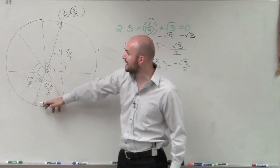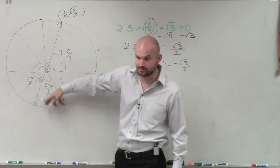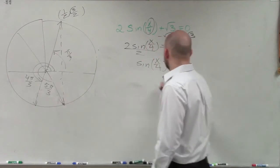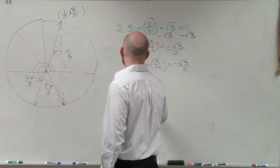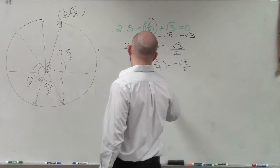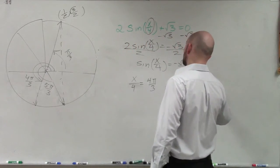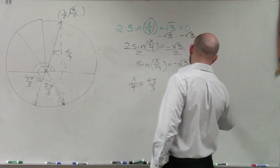This point would be negative 1 half, negative square root of 3 over 2. This point would be positive 1 half, negative square root of 3 over 2. So therefore, I can now say x divided by 4 equals 4 pi over 3, and x divided by 4 equals 5 pi over 3.